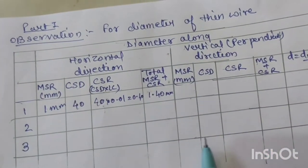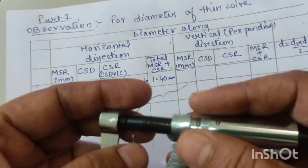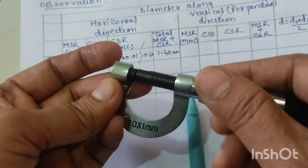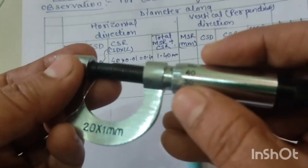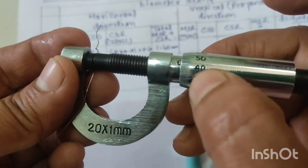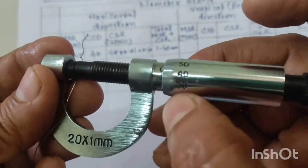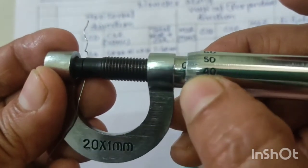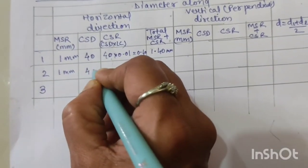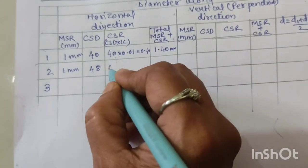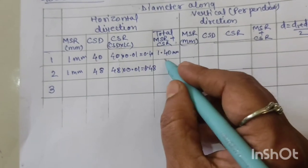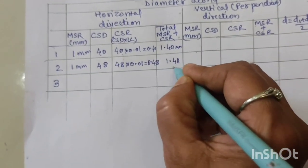In the same way we find the reading at a second position along horizontal direction. The MSR doesn't change, it is still 1 mm, but now the CSD is different: it is 48. So CSR = 48 × 0.01 = 0.48 mm. Total reading = MSR + CSR = 1 + 0.48 = 1.48 mm.